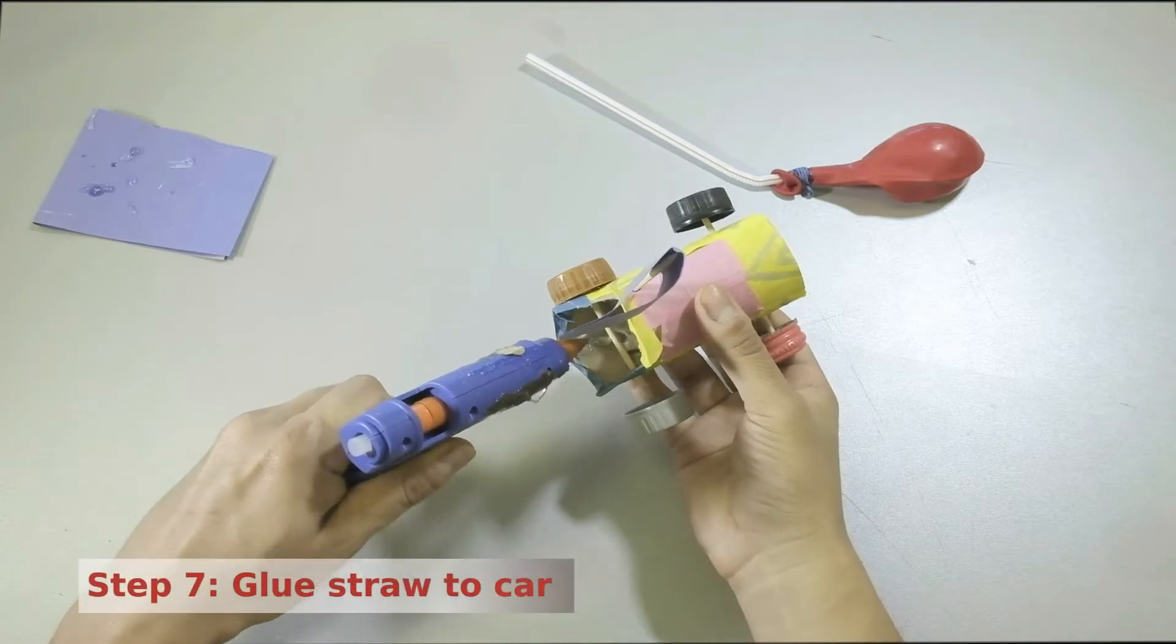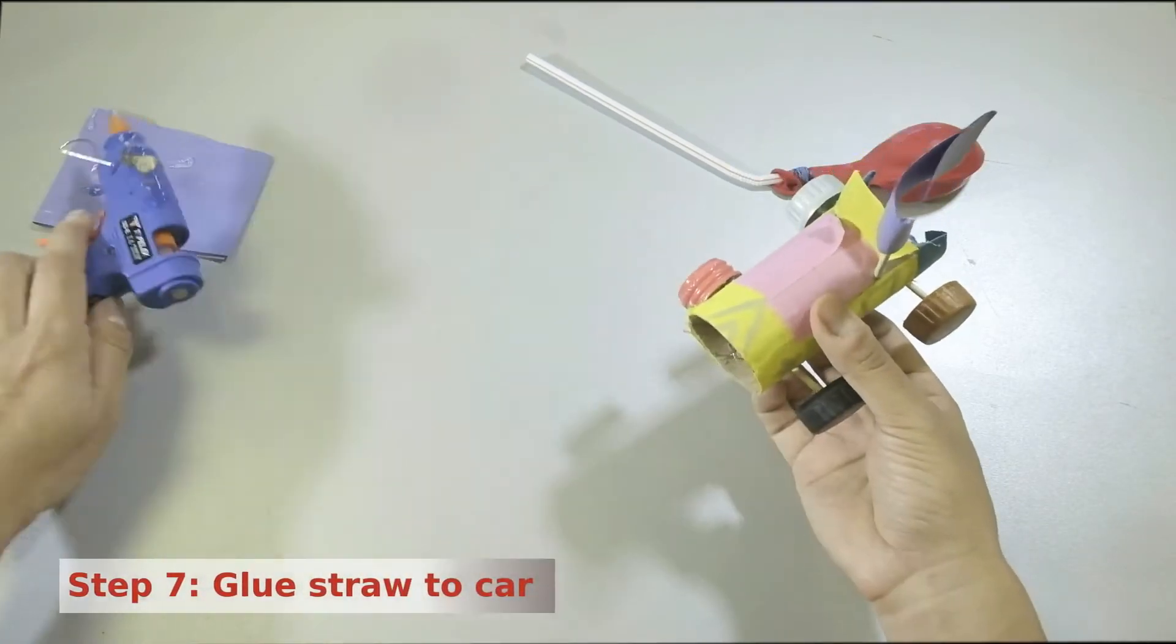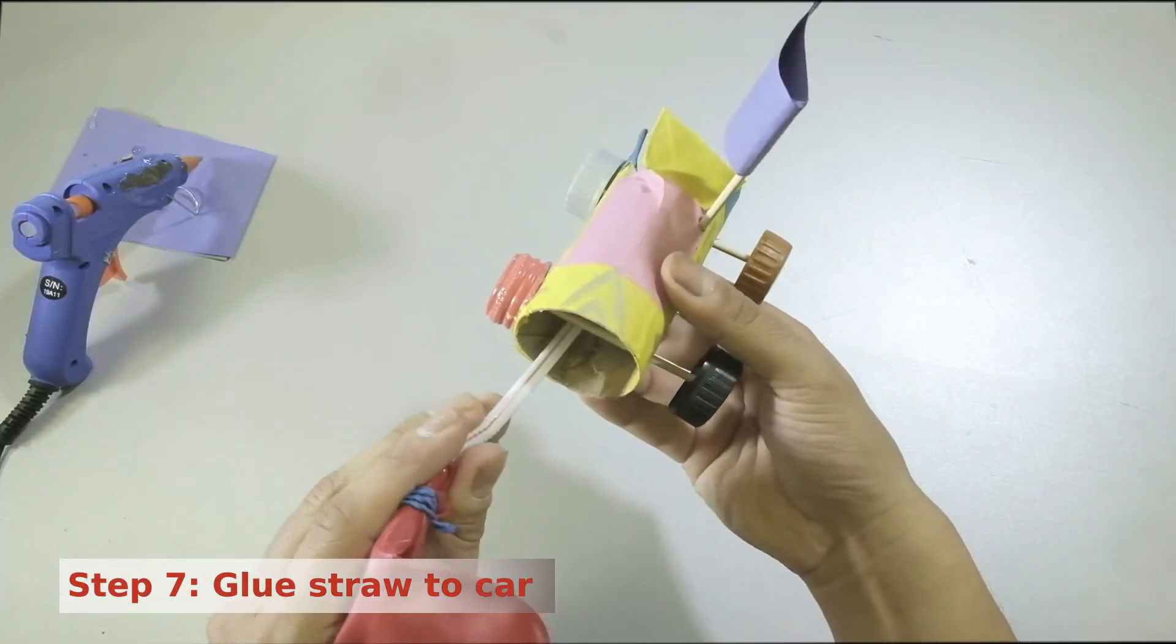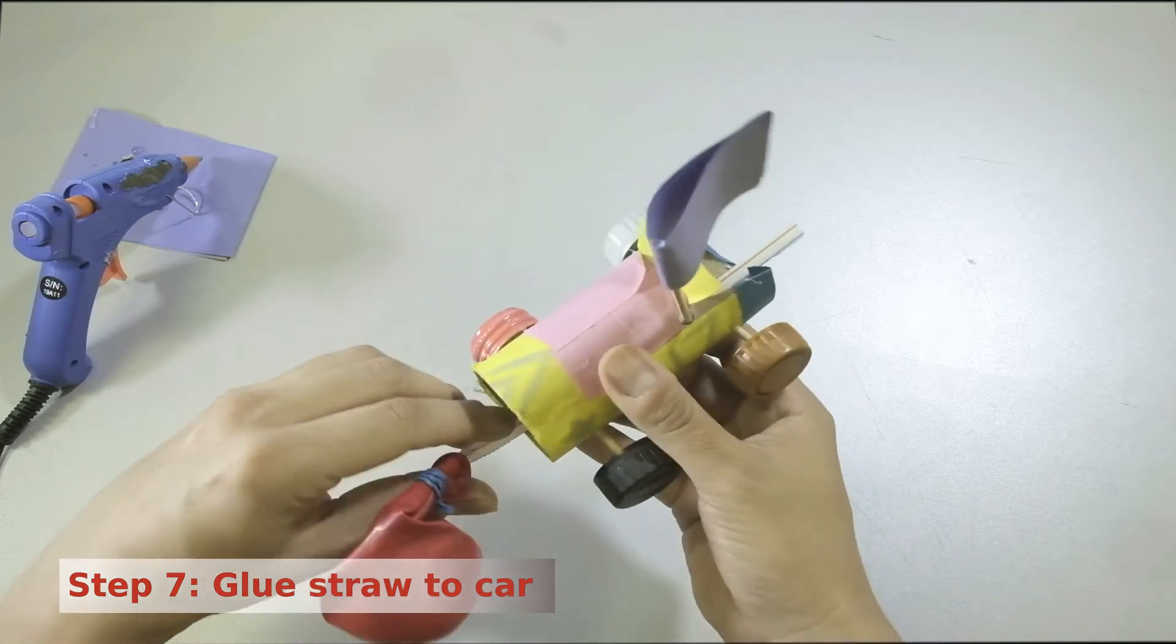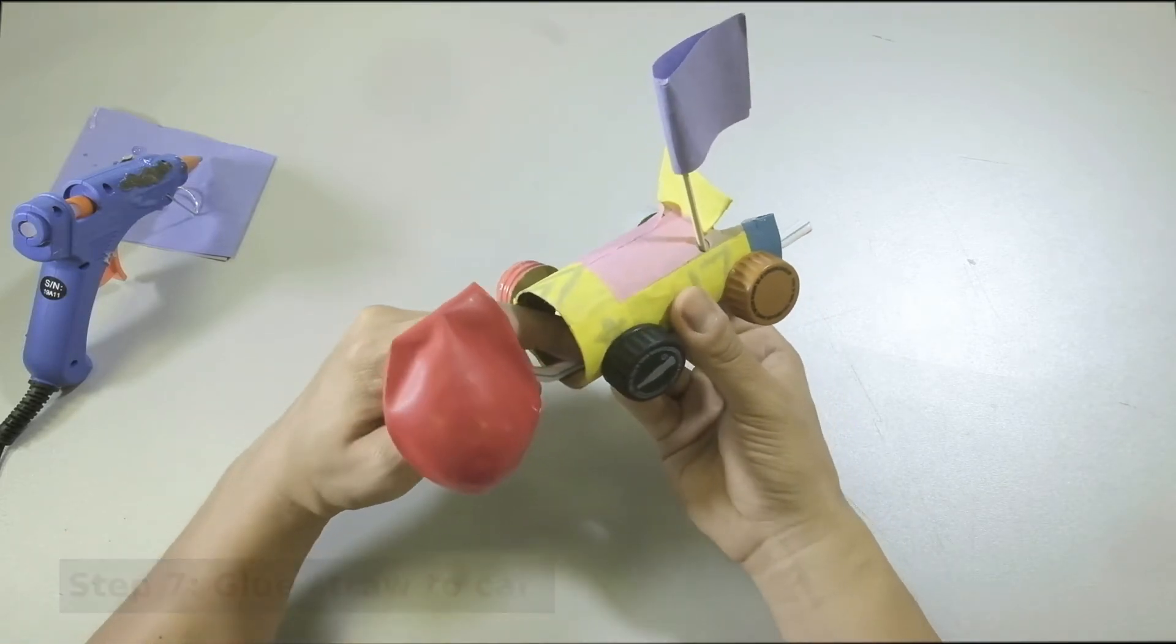Run the straw through the inside of the tube, resting it on the base. The balloon end should extend out the front of your car with the elbow angled upward and an inch or so of the straw should extend out the back of the car. Tape or hot glue the straw to the base of the tube.